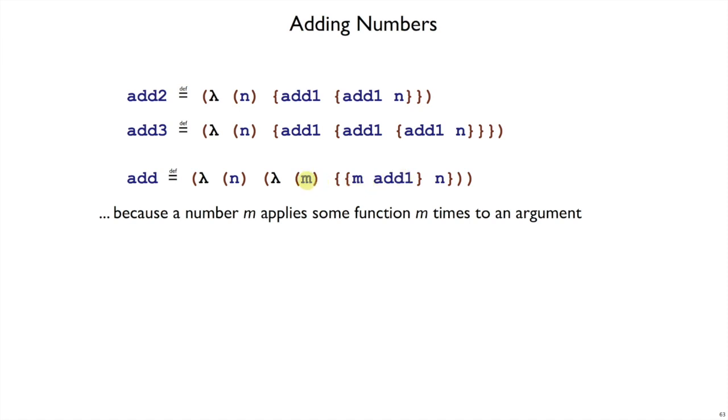So again, we're exploiting the encoding of m. We're exploiting the way that m is represented to implement this kind of primitive on numbers. And that makes sense. Primitives always are implemented in terms of the actual implementation of the data types that they work on.